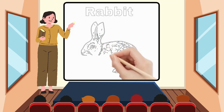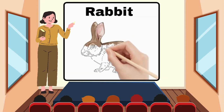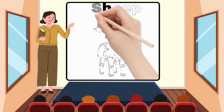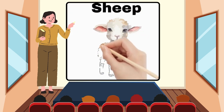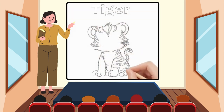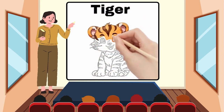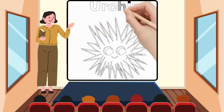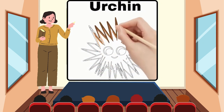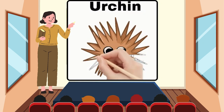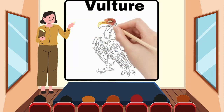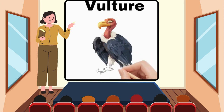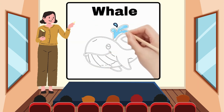R for Rabbit. S for Sheep. T for Tiger. U for Urchin. V for Vulture. W for Whale.